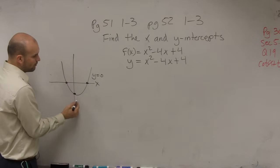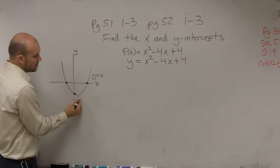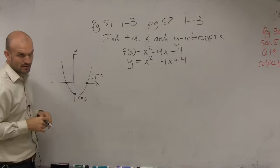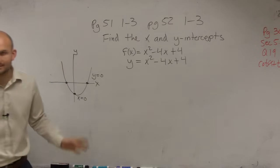When we look at the y intercept, that means where the graph crosses the y-axis, we know that x equals 0. Does everybody see that?